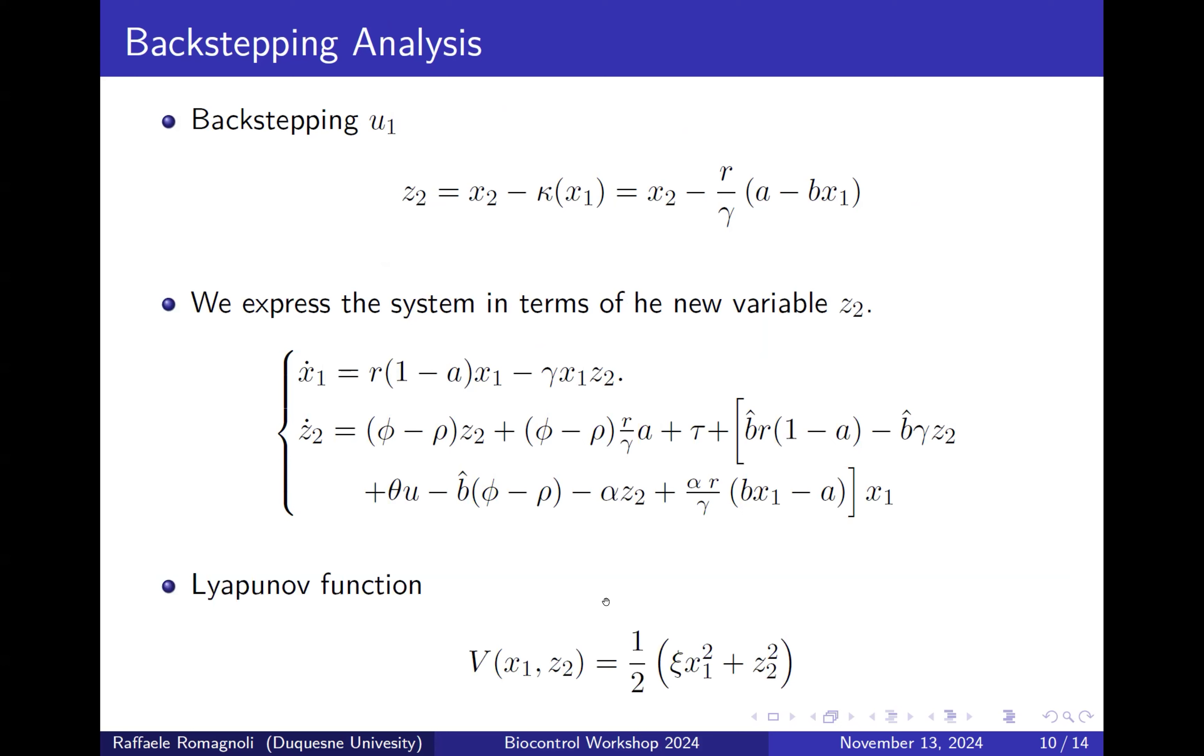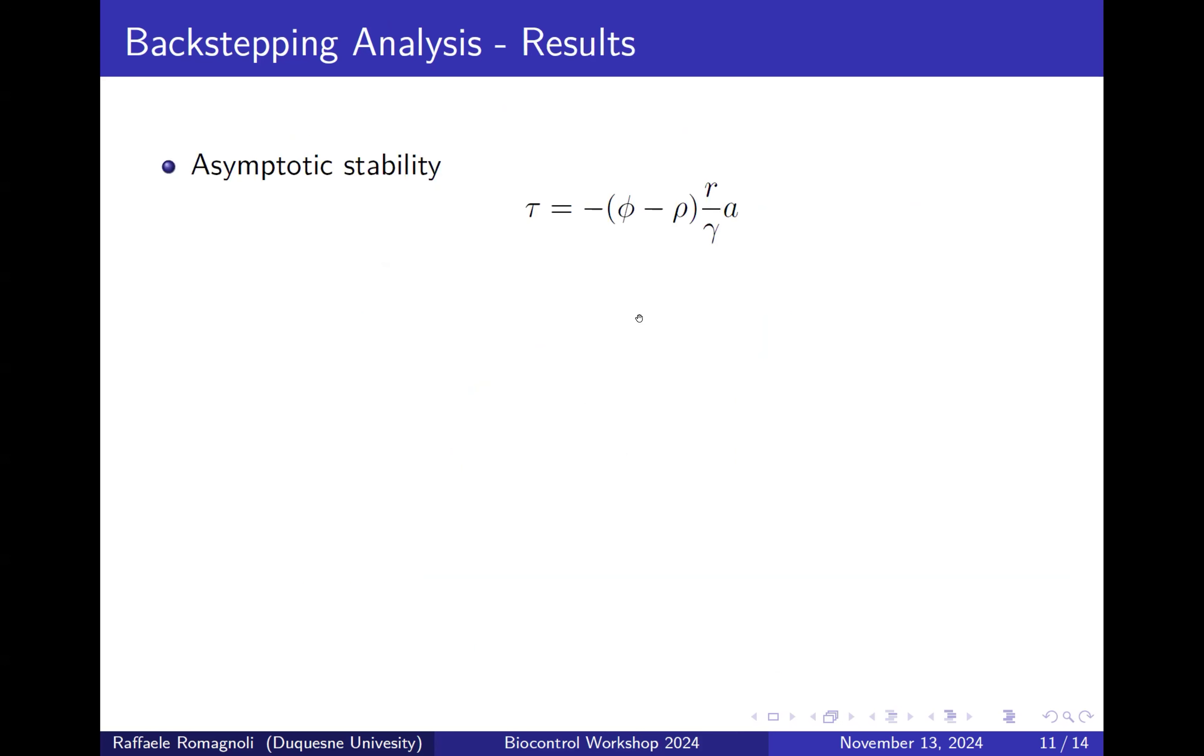To do so, we define this Lyapunov function. I omitted all the computation, but we can prove that this is a Lyapunov function if tau is equal to this quantity, and then the system is going to be asymptotically stable. So if we can keep an activation of the active CAR-T cell equal to this quantity, the system is going to be asymptotically stable. And this is the new equilibrium point where the active and non-active CAR-T cell achieve steady-state values. There is not an uncontrolled activation or uncontrolled growth of the active and non-active CAR-T cells.